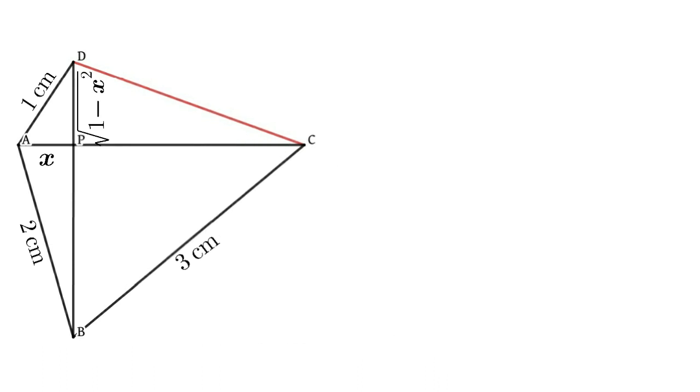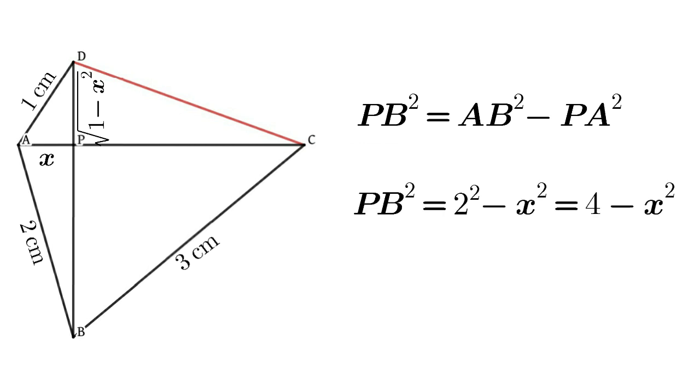Now consider second triangle PAB. Using Pythagorean theorem we get PB squared equals AB squared minus PA squared. That is, PB squared equals 2 squared minus x squared, which is equal to 4 minus x squared, or PB equals root of 4 minus x squared.